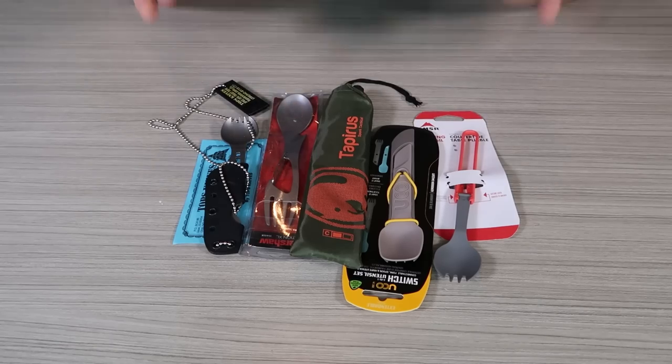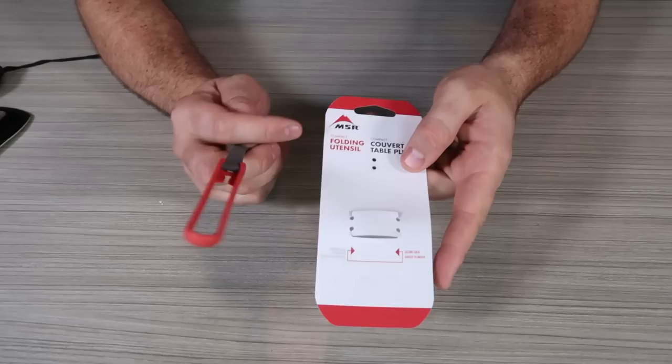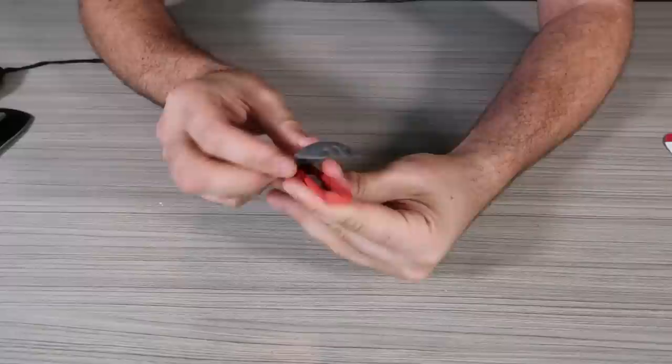Today I'm going to show you five of my favorite camping utensils. First of all, we're going to go with something simple like MSR, a really good brand. This is a folding spork. You push on that and then fold it.